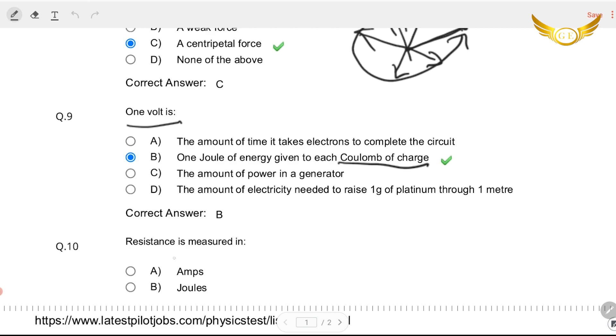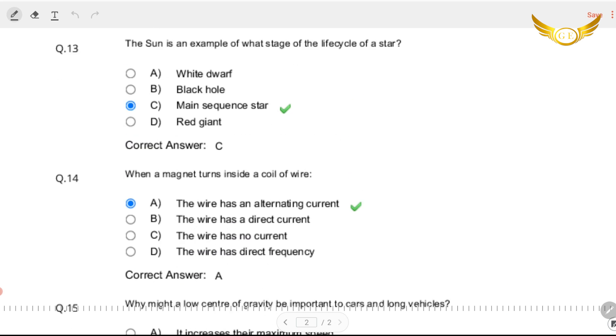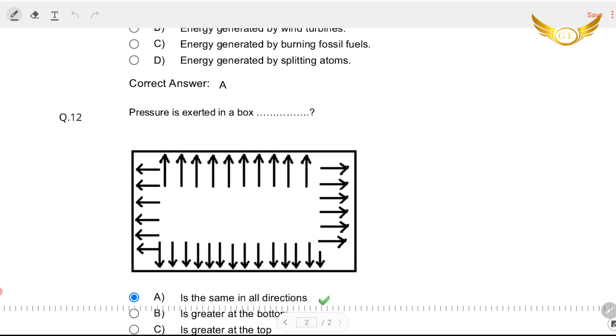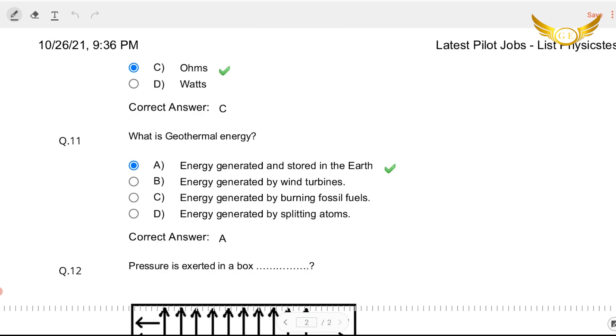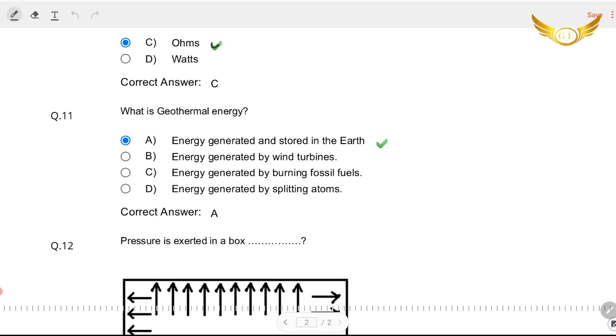So the next question is, resistance is measured in, well it is very easy. We don't have to see the options. The answer is ohms and let's just see what the options are. Yes. Number C is the answer. Resistance is measured in ohms.